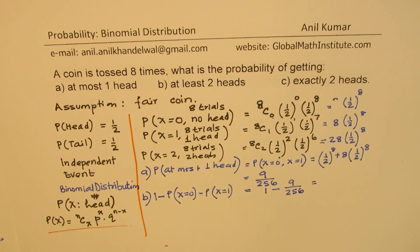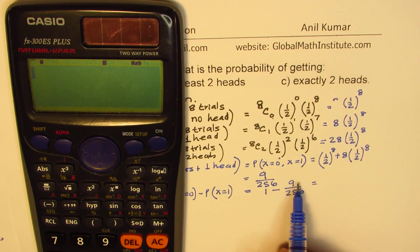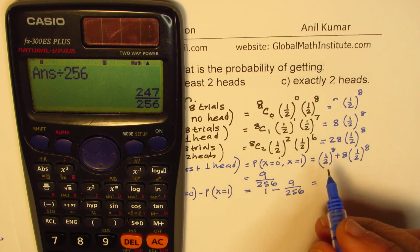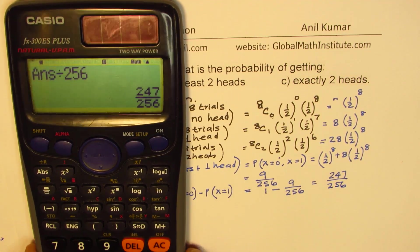So this could be written as one minus, we already find this, which is nine over 256. Is that clear to you? So that becomes the probability of getting at least two heads. So one minus this probability. And we can use the calculator once again and figure this out. Or 256 minus nine over 256. So 256 minus nine divided by 256. So we get this answer as 247 over 256. Is that clear to you? Perfect.